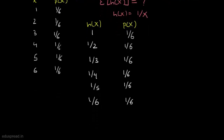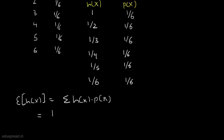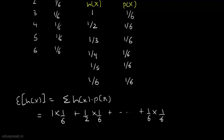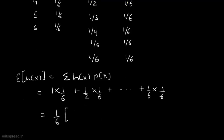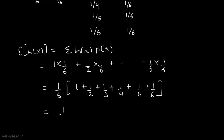We have to calculate the expected value of h(x), which equals the summation of h(x) multiplied by the probability of x. This equals 1×(1/6) + (1/2)×(1/6) + ... + (1/6)×(1/6). Taking 1/6 common, this is (1/6)(1 + 1/2 + 1/3 + 1/4 + 1/5 + 1/6), which equals 1 divided by 2.44. Since 1/2.44 is greater than 1/3.5, you should gamble.